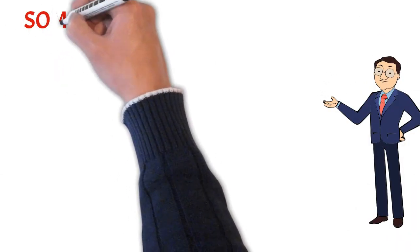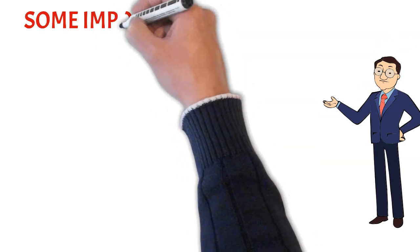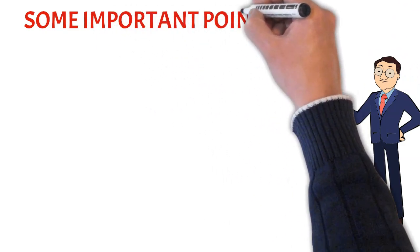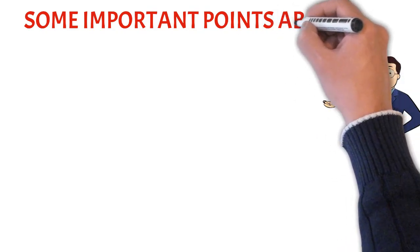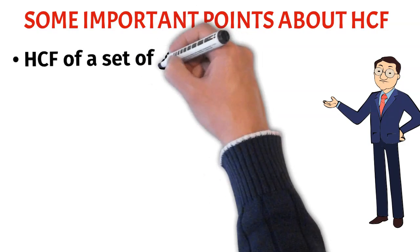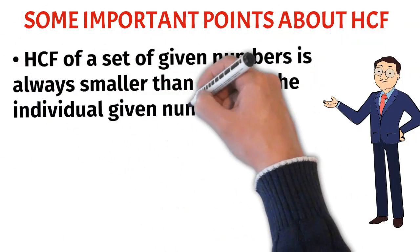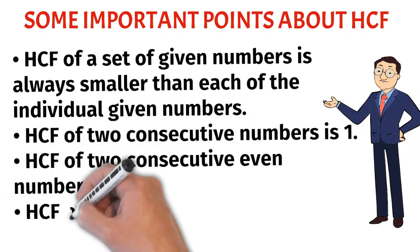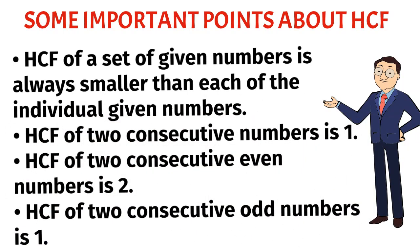Let us discuss some important points about HCF. The HCF of a set of given numbers is always smaller than each of the individual given numbers. The HCF of two consecutive numbers is 1. The HCF of two consecutive even numbers is 2. The HCF of two consecutive odd numbers is 1.